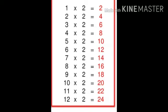Six twos are twelve. Seven twos are fourteen. Eight twos are sixteen. Nine twos are eighteen. Ten twos are twenty. Eleven twos are twenty-two. Twelve twos are twenty-four.